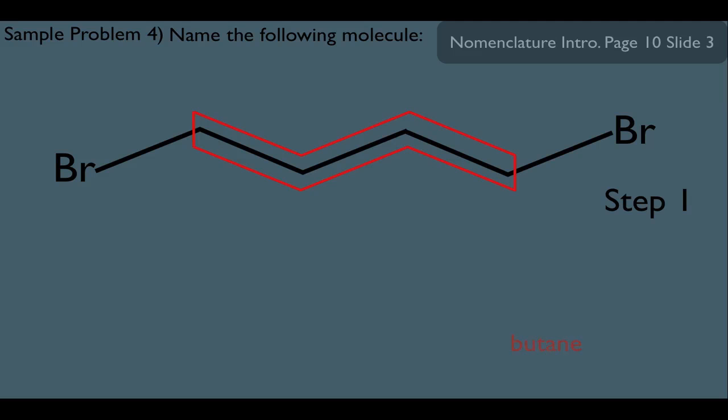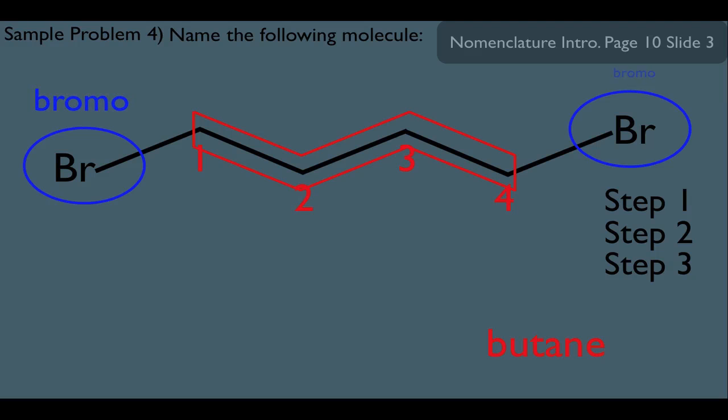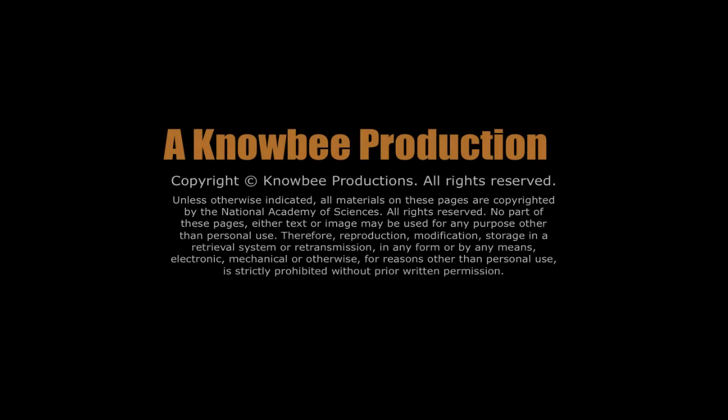We've got four carbons, so that makes this parent name butane. Now numbering the carbons here, you can go either way because this molecule is symmetrical. So one, two, three, and four would be this. Which brings us to step three here, circle and label our substituents. We have these two right here. They're both called bromo. So we're ready now for step four. Let's put them all into the name here. It would be 1,4-dibromobutane.